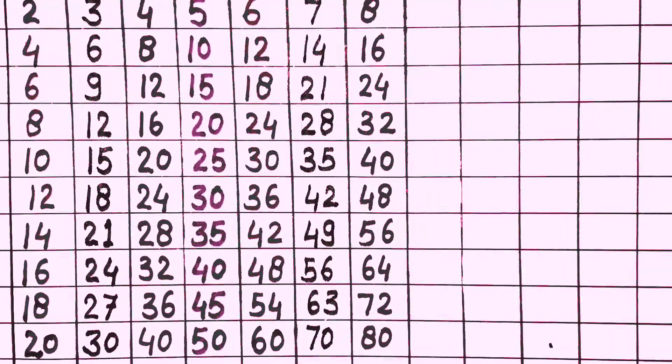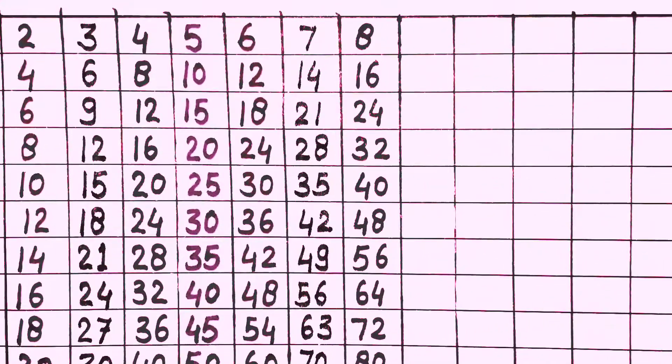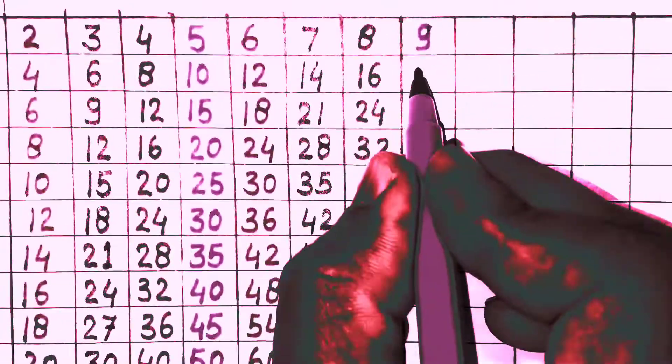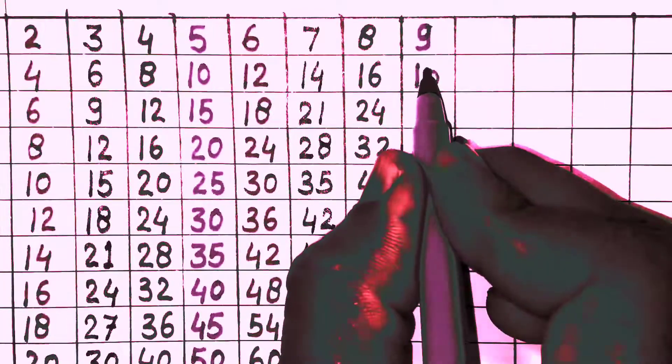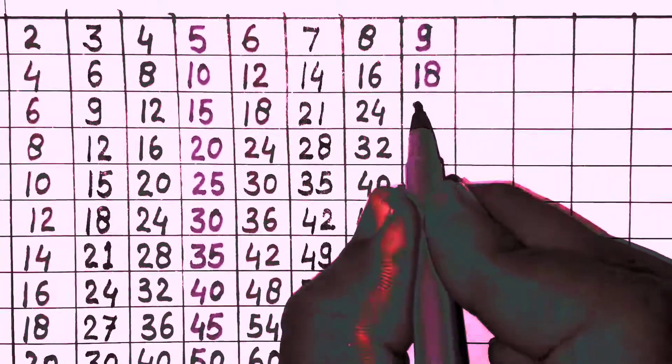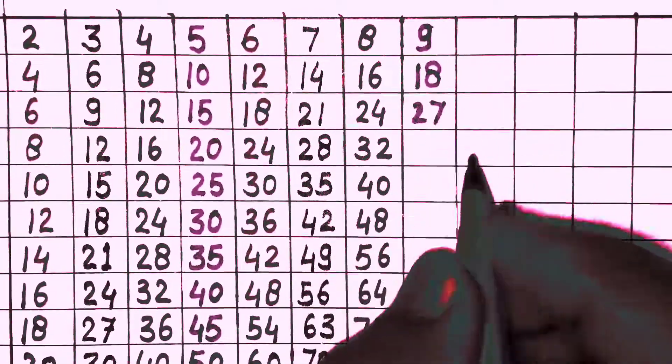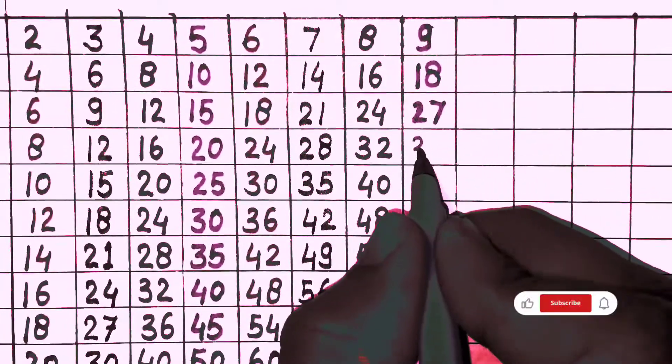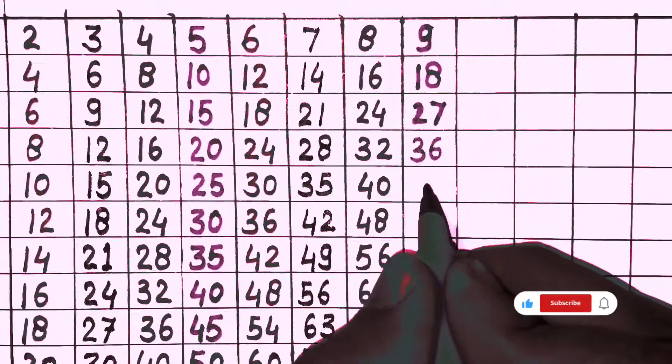9 times 1 is 9, 9 times 2 is 18, 9 times 3 is 27, 9 times 4 is 36, 9 times 5 is 45.